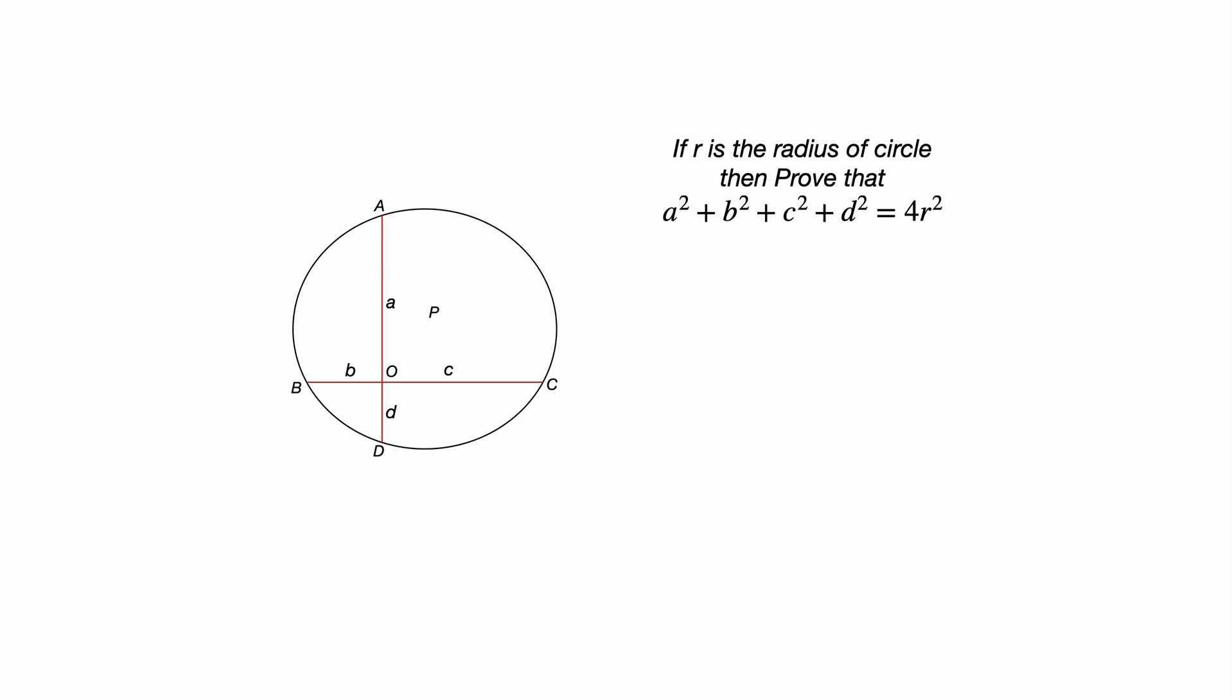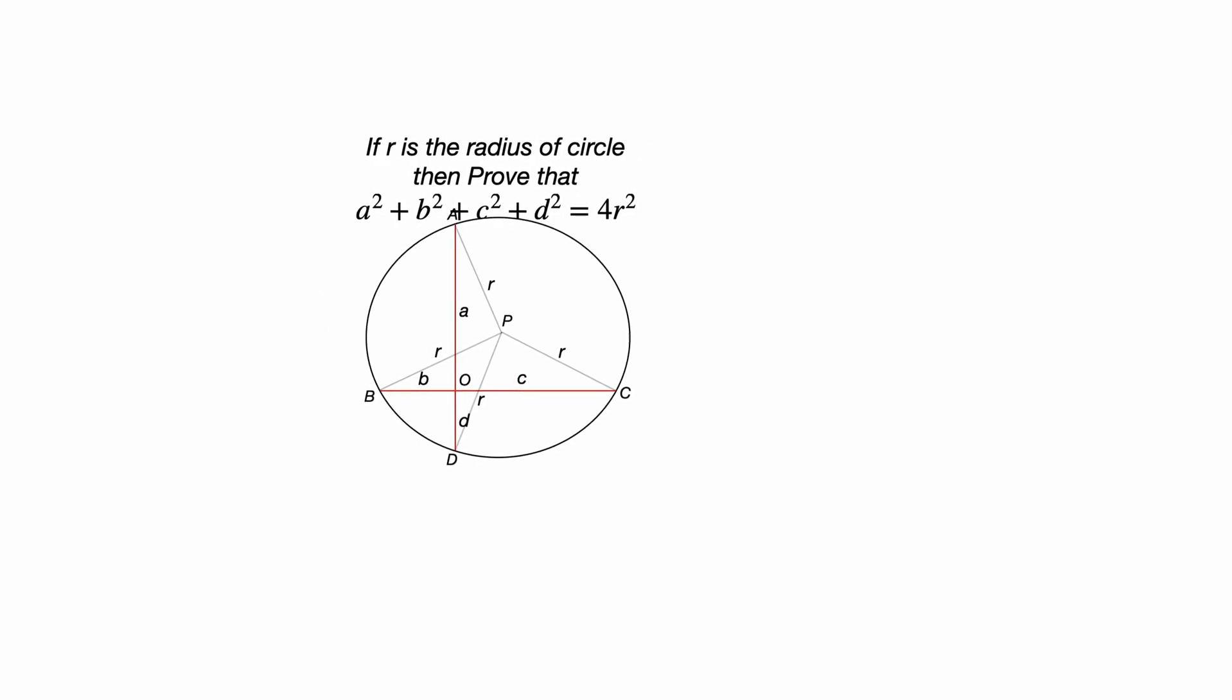Let's take P as the center of the circle. Join PA, PB, PC, and PD. PA, PB, PC, PD all are the radius of the circle. Let's take them small r. Let's see how we can solve this question.